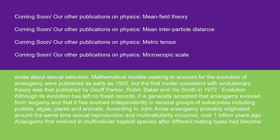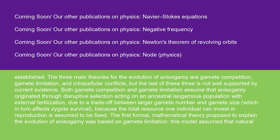According to some researchers, anisogamy probably originated around the same time sexual reproduction and multicellularity occurred, over one billion years ago. Anisogamy first evolved in multicellular haploid species after different mating types had become established. The three main theories for the evolution of anisogamy are gamete competition, gamete limitation, and intracellular conflicts, but the last of these three is not well supported by current evidence. Both gamete competition and gamete limitation assume that anisogamy originated through disruptive selection acting on an ancestral isogamous population with external fertilization, due to a trade-off between larger gamete number and gamete size, which in turn affects zygote survival, because the total resource one individual can invest in reproduction is assumed to be fixed.